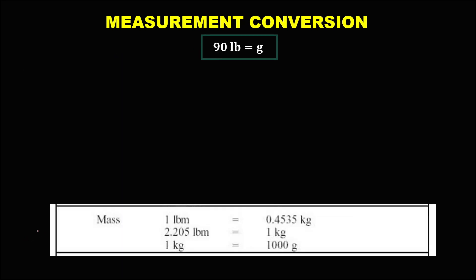For this given, using this table, convert 90 pounds to grams. From this table, since there is no direct conversion from pounds to grams, we need to convert first pounds to kilogram. We have two conversions available, but I prefer to use the conversion from pounds to kilogram. Since the given is in pounds, pounds must be in the denominator and kilogram must be in the numerator. The conversion: 2.205 pounds is equal to 1 kilogram.